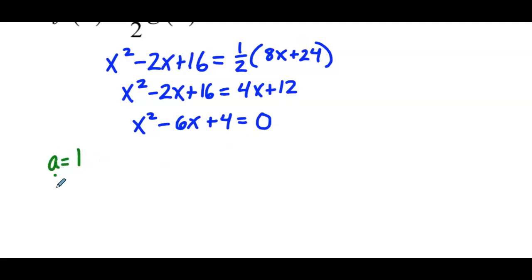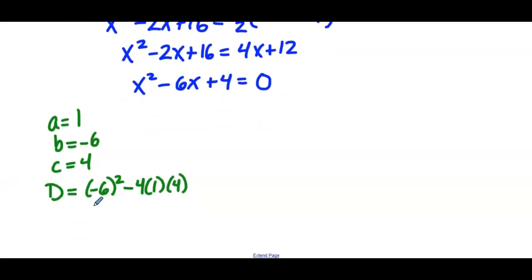So we'll set up the quadratic formula. So a equals 1, b equals negative 6, c equals 4. So the discriminant is negative 6 squared minus 4ac. So that's 36 minus 16, which is 20. So 20 is not a perfect square, so it confirms that we cannot factor the quadratic. But it is positive, so that tells us we are going to have solutions to this equation.